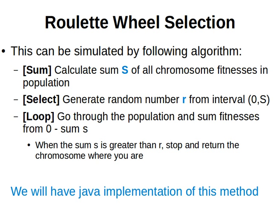Welcome back. In the previous video, we explained how the roulette wheel selection method works. Each chromosome covers an area of a pie chart or roulette wheel, and that area corresponds to its fitness value, meaning that the higher the fitness value, the larger the area is. Now, we can simulate this by the following algorithm.